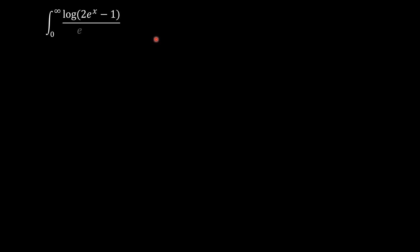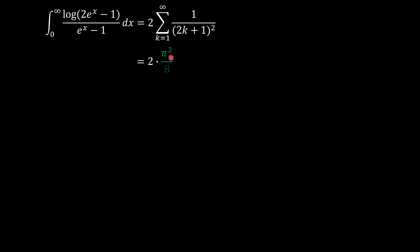Since our integral equals 2 times the sum of 1/(2k plus 1) squared, and the odd terms sum to pi squared over 8, the answer is 2 times pi squared over 8, which equals pi squared over 4. This is the answer provided in the Integration Bee answer key.